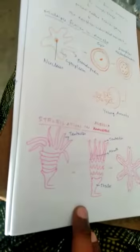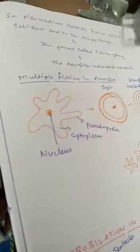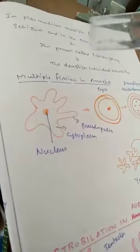In Plasmodium, Multiple Fission occurs in the cyst and host cell stage. This process is called schizogony. The daughter cysts are produced, and the daughter individuals are called Merozoites.